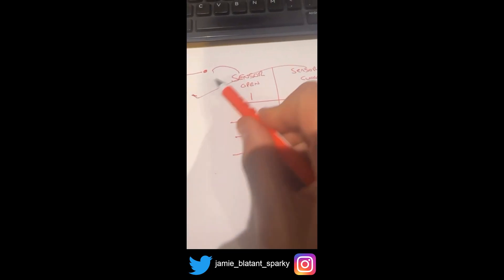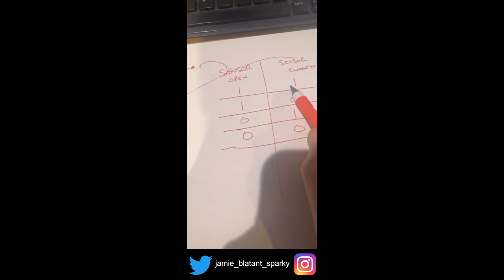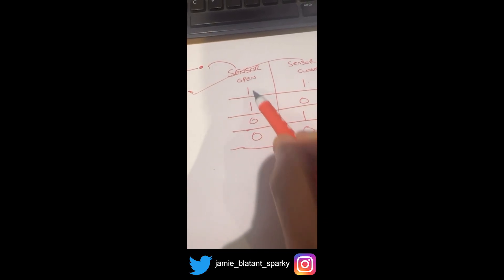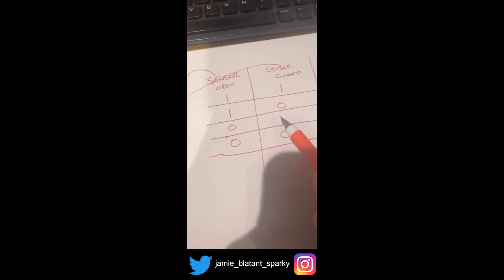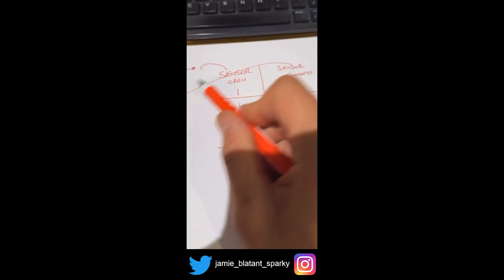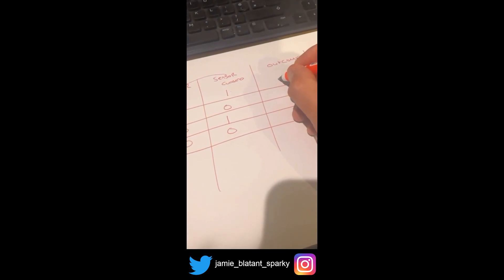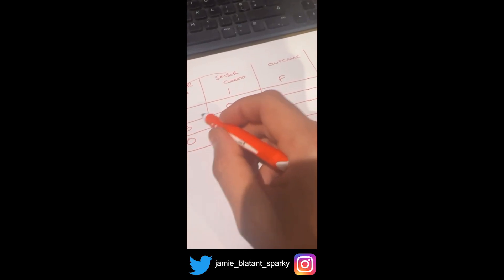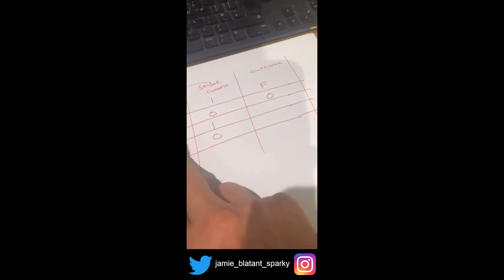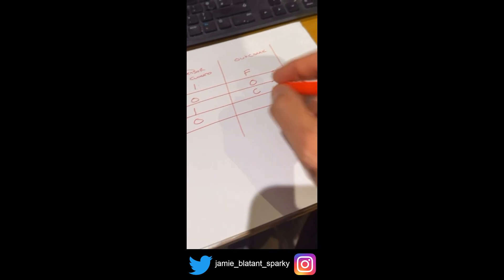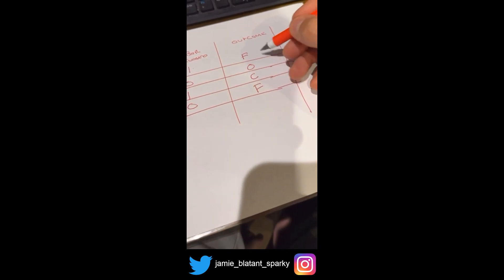Both sensors could be detecting something — that's one possibility. The open sensor detecting something and the closed sensor detecting nothing would mean it's open. The open sensor detecting nothing and the closed sensor detecting something means it's closed. Then you'd have zero and zero where no sensor detects anything. The outcomes: if they're both on it's a fault; open sensor on means it's open; closed sensor on means it's closed; both off means it's faulty.